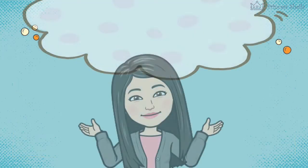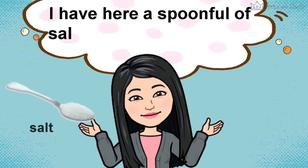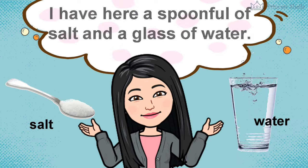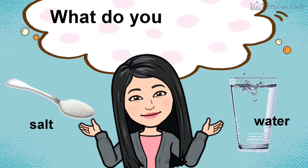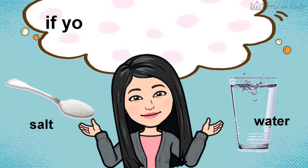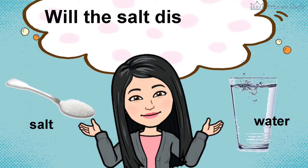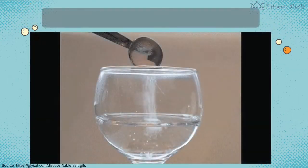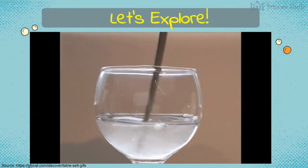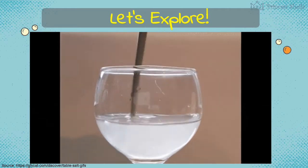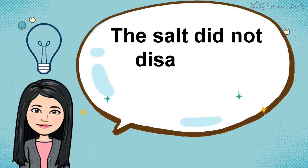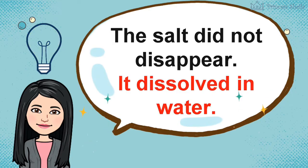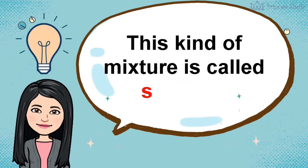Let's experiment. I have here a spoonful of salt and a glass of water. What do you think will happen to the salt if you mix it with water? Will the salt disappear, or will the salt still be there? Let's see. The salt did not disappear — it dissolved in water. This kind of mixture is called a solution.